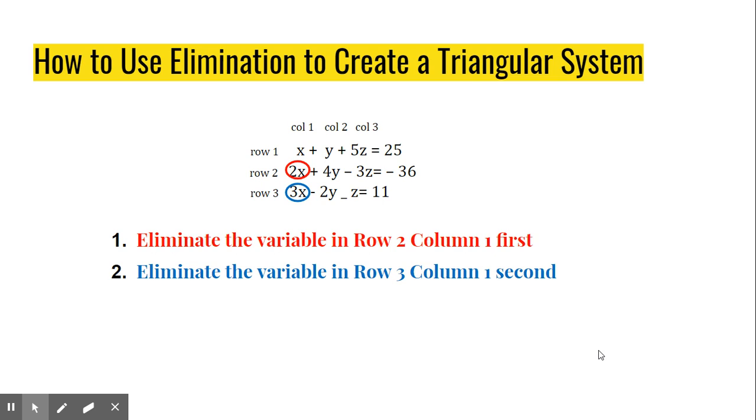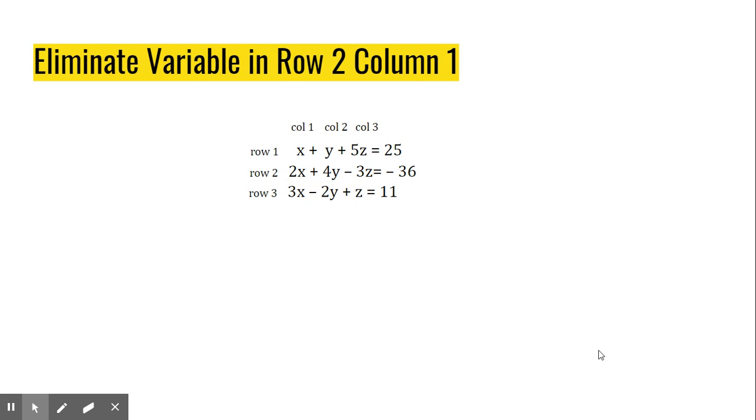Next, you're going to eliminate the variable in Row 3, Column 1. And last, you're going to eliminate the variable in Row 3, Column 2. Once you do that, you have a triangular system, which you can use back-substitution to solve. Now let's dive into the details of how this works.